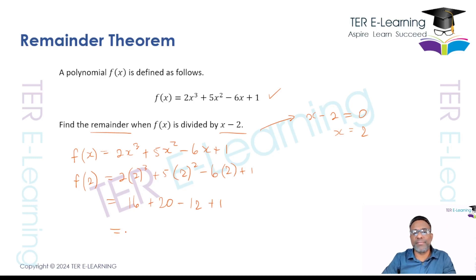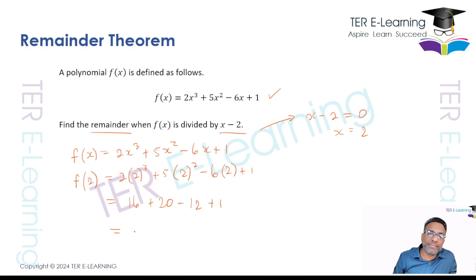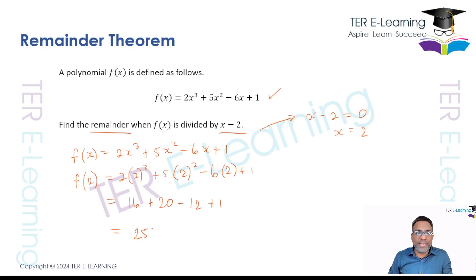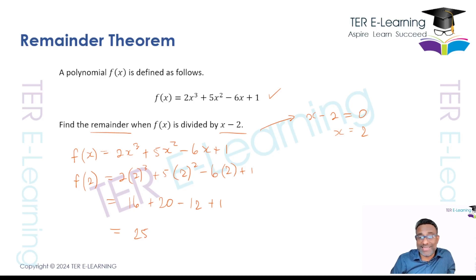So this gives me 16 plus 20 minus 12 plus 1, and I'm getting 25 as the answer. So we're getting 25 as our remainder. Now I'm going to do this again by a second method, which is the long division method.